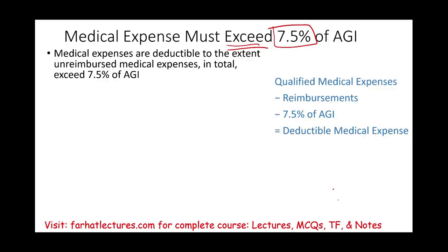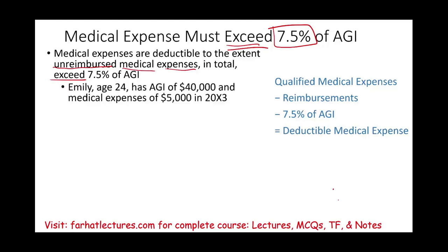Medical expenses are deductible to the extent that unreimbursed medical expenses — meaning amounts you did not get reimbursed for — exceed 7.5% of adjusted gross income. For example, Emily, age 24, has an adjusted gross income of $40,000 and medical expenses of $5,000. How much can she deduct?